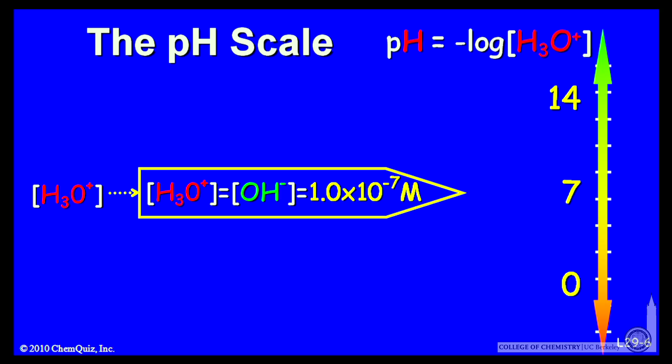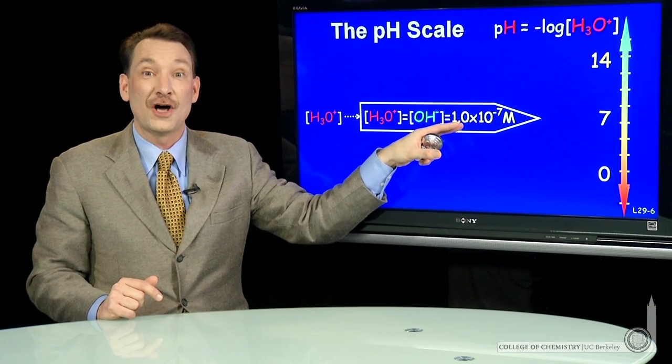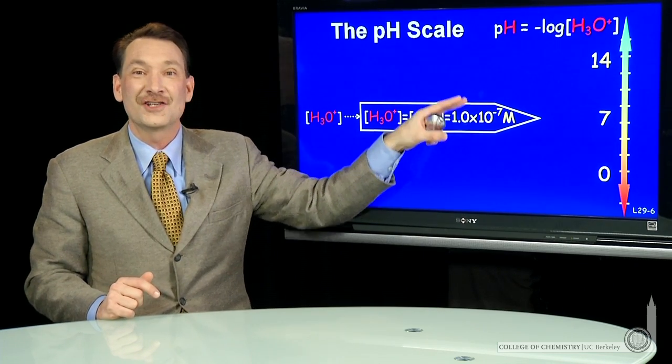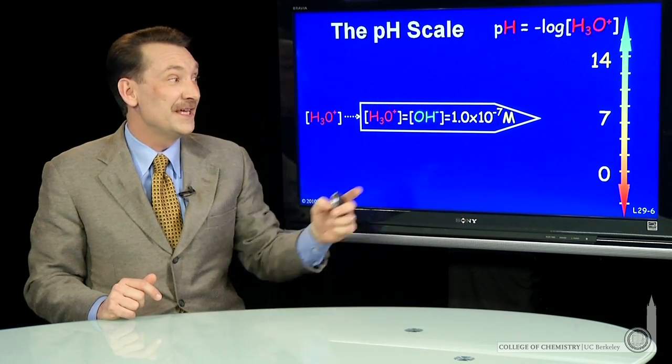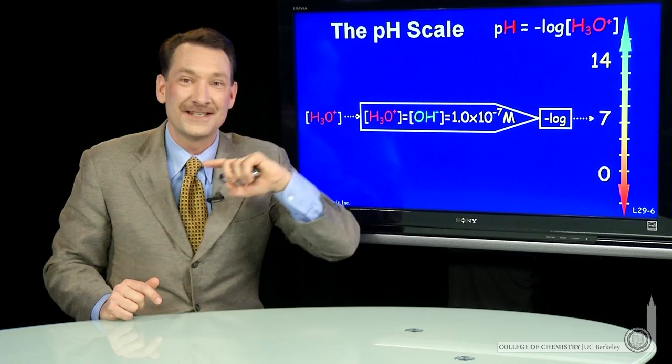So the pH of this solution would be pH is minus log of the H3O+. H3O+ is 10 to the minus 7. Minus log of 10 to the minus 7 is 7. So the pH of pure water is 7.